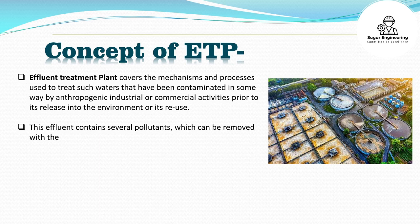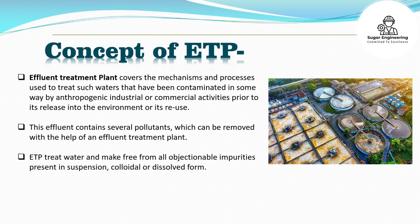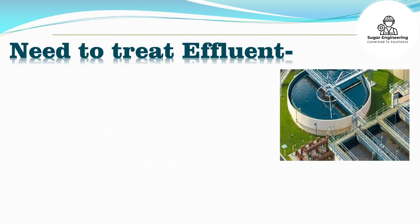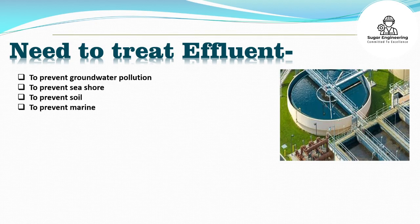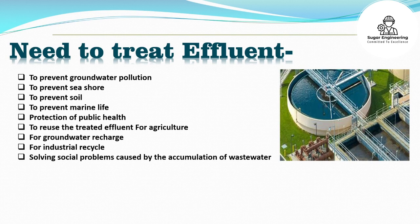This effluent contains several pollutants which can be removed with the help of an effluent treatment plant. ETP treats water and makes it free from all objectionable impurities present in suspension, colloidal, or dissolved form. We need to treat effluent to prevent groundwater pollution, prevent seashore, soil, and marine life contamination, protect public health, and to reuse the treated effluent for agriculture, groundwater recharge, industrial recycle, and for solving social problems caused by the accumulation of wastewater.